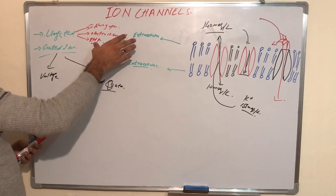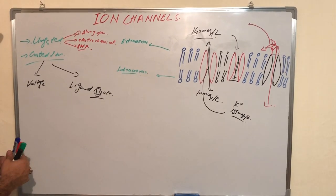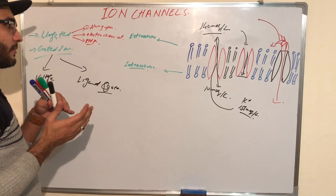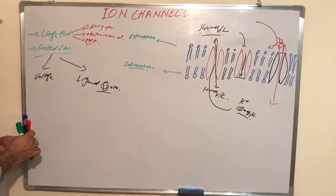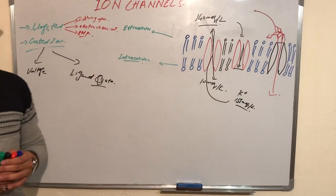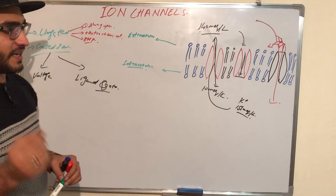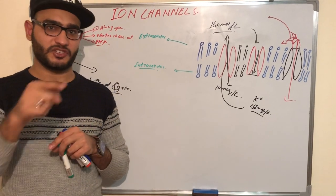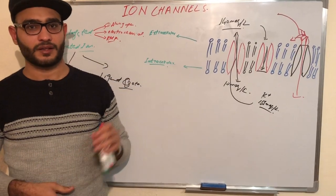In quick review: ion channels are divided into un-gated and gated. Un-gated are always open, follow the electrochemical gradient allowing ions like sodium from high to low concentration, and play a main role in resting membrane potential. Gated ion channels are divided into voltage-gated and ligand-gated. Voltage-gated channels open at a specific voltage for each ion. Ligand-gated channels have specific receptors — when a drug or neurotransmitter binds, the receptor structure changes and allows the molecule into the cell. That's all about ion channels.